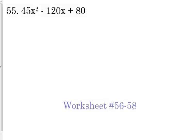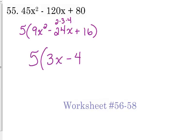Let's look at 55 as well. As it is written, this is not a perfect square trinomial, because 45 and 80 are not perfect squares. But we should always look for a GCF. All those numbers are divisible by 5. So we'll start by taking out a 5. So we're left with 9x² - 24x + 16. Now it is a perfect square trinomial. 9 is a perfect square, 16 is a perfect square, 24 is 2 times 3 times 4. So it's going to be (3x - 4)².